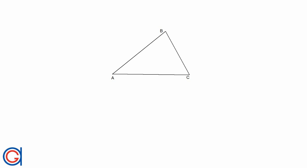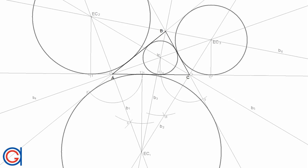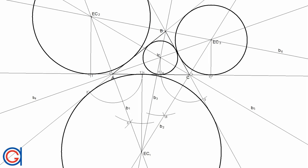Hello, today we are going to learn how to draw the in-circle and the three x-circles of a given triangle ABC. The in-circle of a triangle is the largest possible circle we can draw inside the triangle and forms a tangent with the three sides.